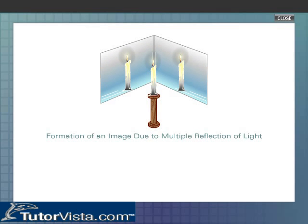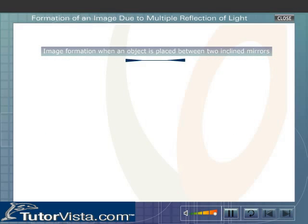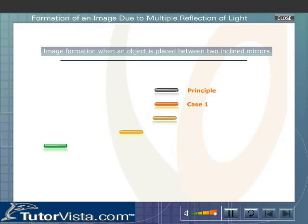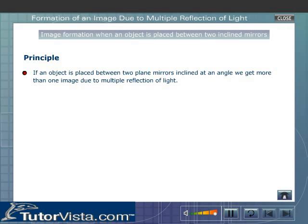Formation of an image due to multiple reflection of light. If an object is placed between two plane mirrors inclined at an angle, we get more than one image due to multiple reflection of light.